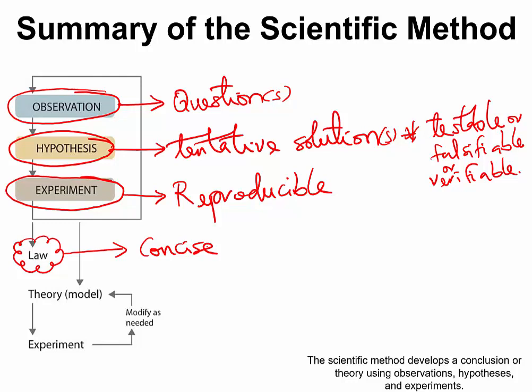For example, the law of conservation of mass says that matter can neither be created nor destroyed. Well, that is a scientific law. But that statement doesn't tell you how the law works. It simply tells you that matter can neither be created nor destroyed.